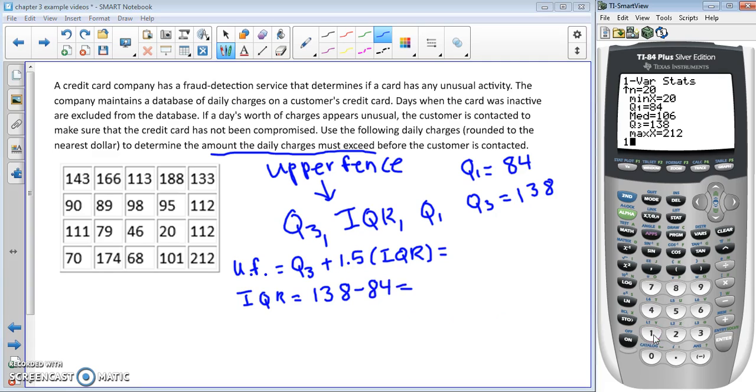IQR is the range of the middle 50% of the values. IQR goes with median, and we want to use that when our data is skewed. So 54.